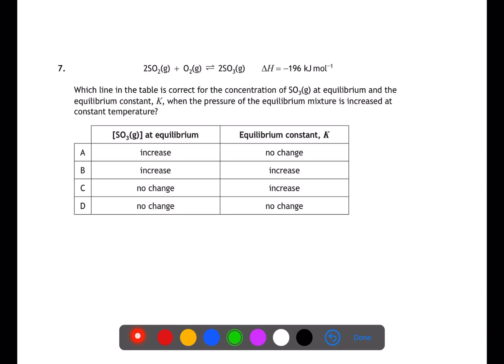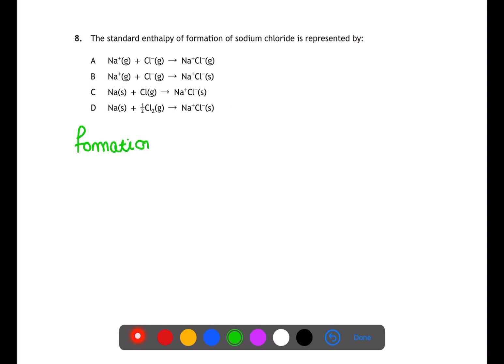Question 7 is looking at equilibrium and what happens when pressure is changed. The equilibrium constant is only changed by changing temperature, so changing pressure will have no effect on it. According to Le Chatelier's principle, if you increase the pressure, the equilibrium will move to the side with fewer moles of gas — in this case toward SO3 — so there will be an increase in the concentration of SO3 at equilibrium.